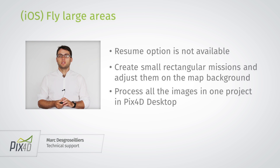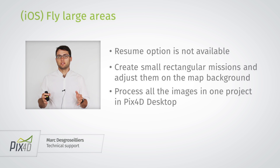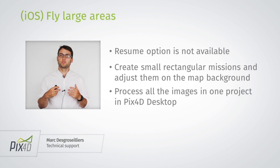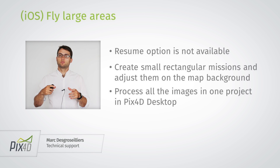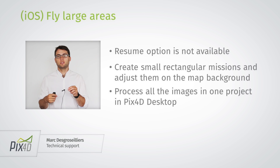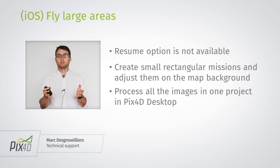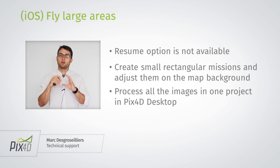One issue with the iOS version is how to fly large areas, because there's no project view in the iOS version. This is something we're working on at the moment, but at the time of this video, it's only available on Android. So, how can you fly large areas with the iOS version? What we recommend is to make several grid missions, and you can use a reference point in the background map to align the different missions. Then you take the images from all these small missions, put them in the same Pix4D project, and process them all together.